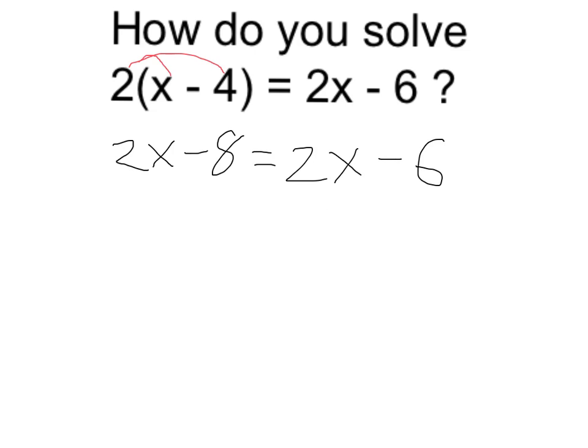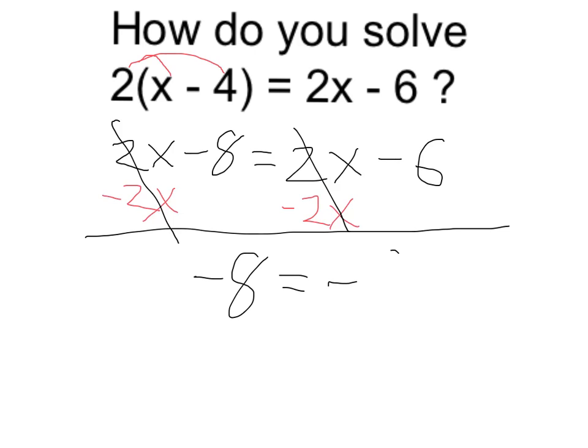This might start looking a little funny to you already when you notice that we have a 2x on both sides. Normally, I want to get my x's on one side, so I subtract the same thing from both sides. But notice if I do that, let's say I subtract 2x on both sides like this, what happens is this cancels out and this does too. That leaves me with negative 8 equal to negative 6.